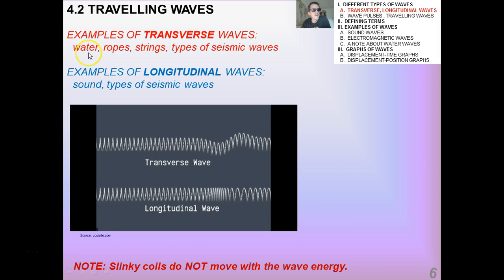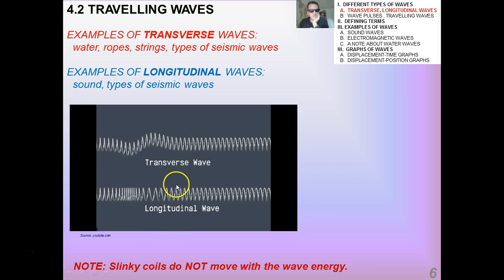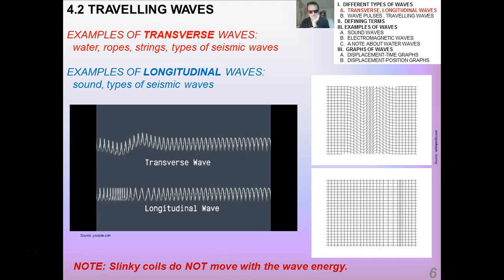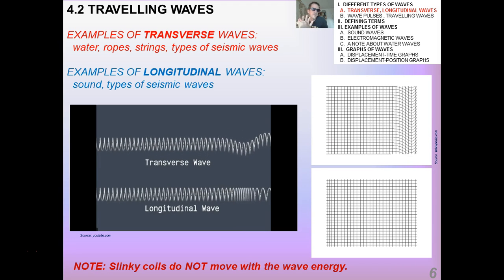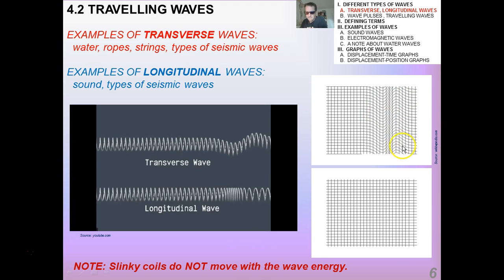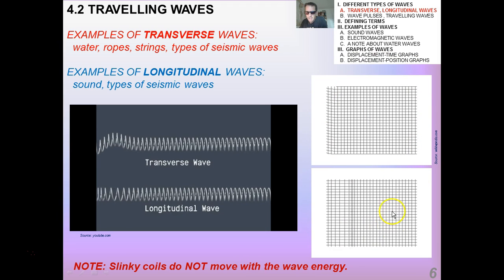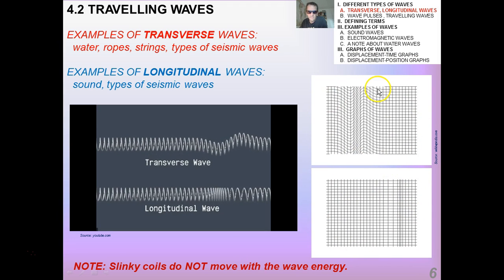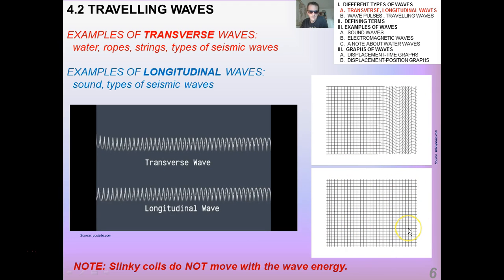Examples of transverse waves: water we treat as transverse, ropes, strings, types of seismic waves. Longitudinal waves: sound is a great longitudinal wave, which we'll study in more detail, and certain types of seismic waves. And this little video here shows you a very nice comparison between a transverse wave and a longitudinal wave. Just remember, slinky coils do not move with the wave energy. If you get online and look at Wikipedia and look up all kinds of different waves, you'll see lots of cool little simulations. What do you think this top one simulates? And what do you think this bottom one simulates? Clearly, this is a transverse wave up here. And this is a longitudinal wave down here.